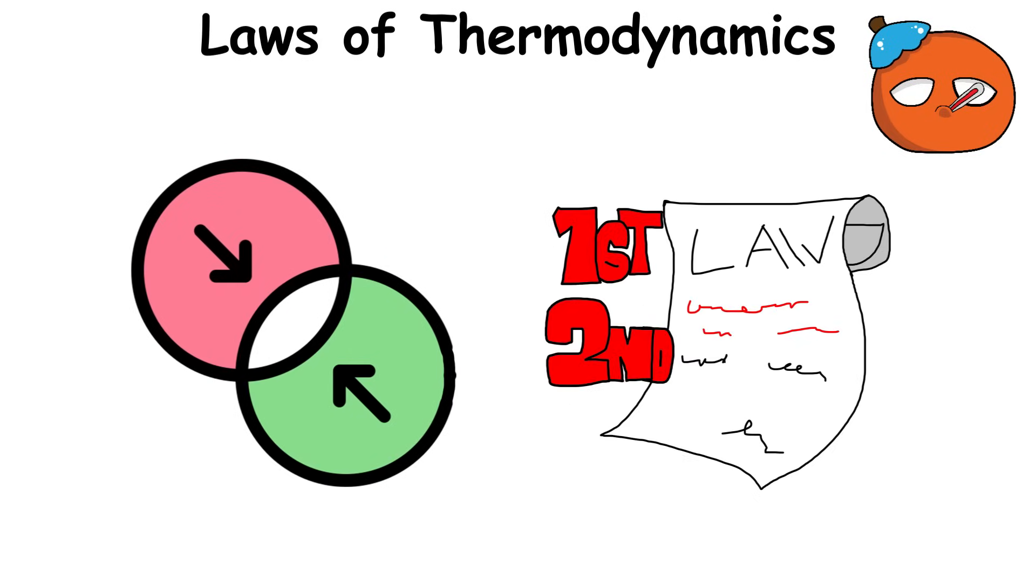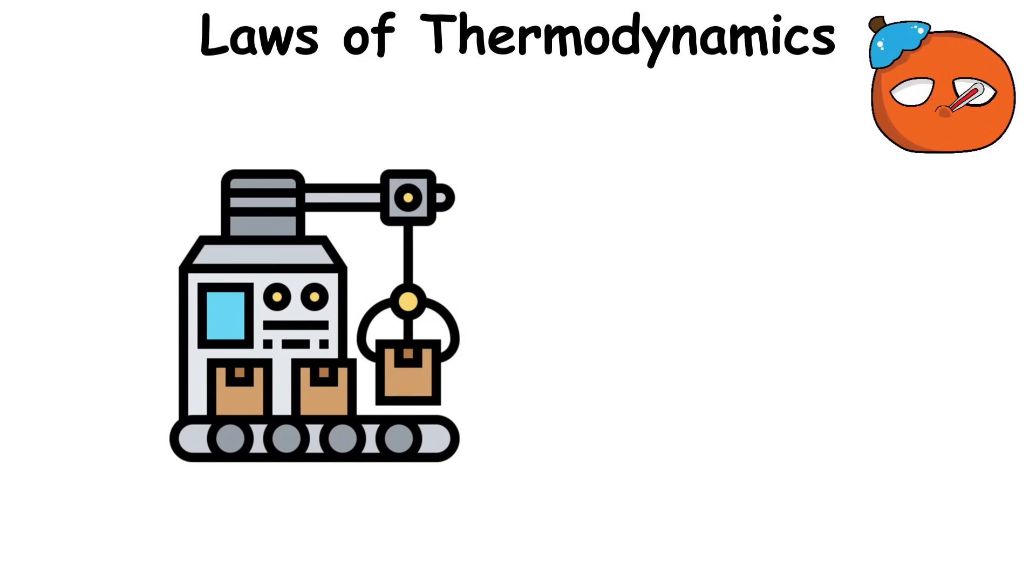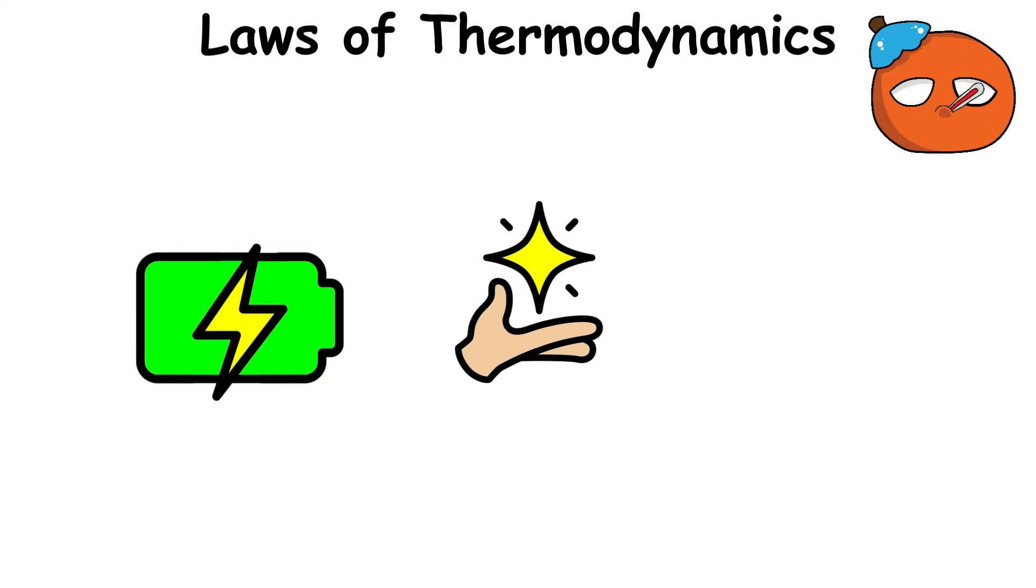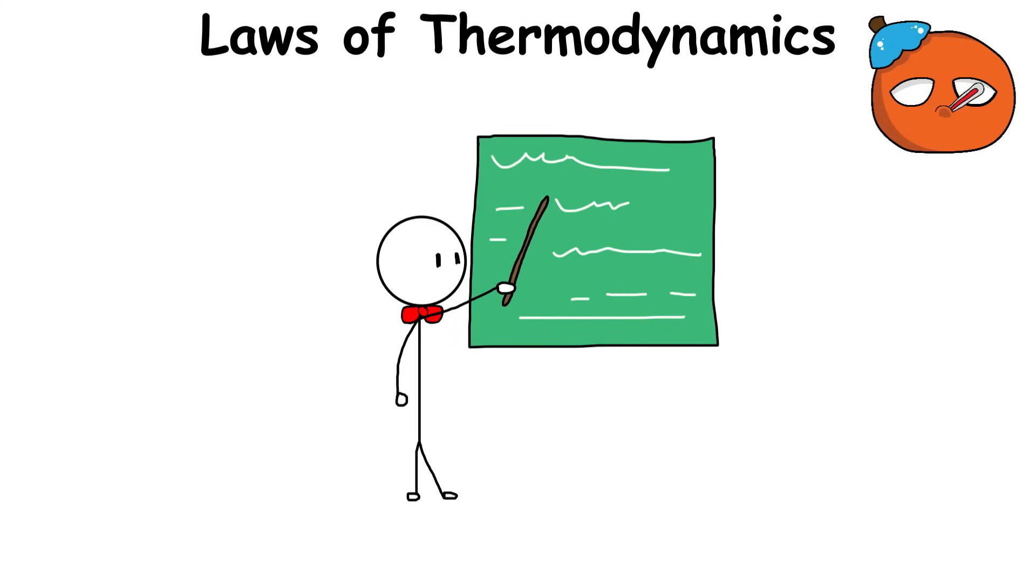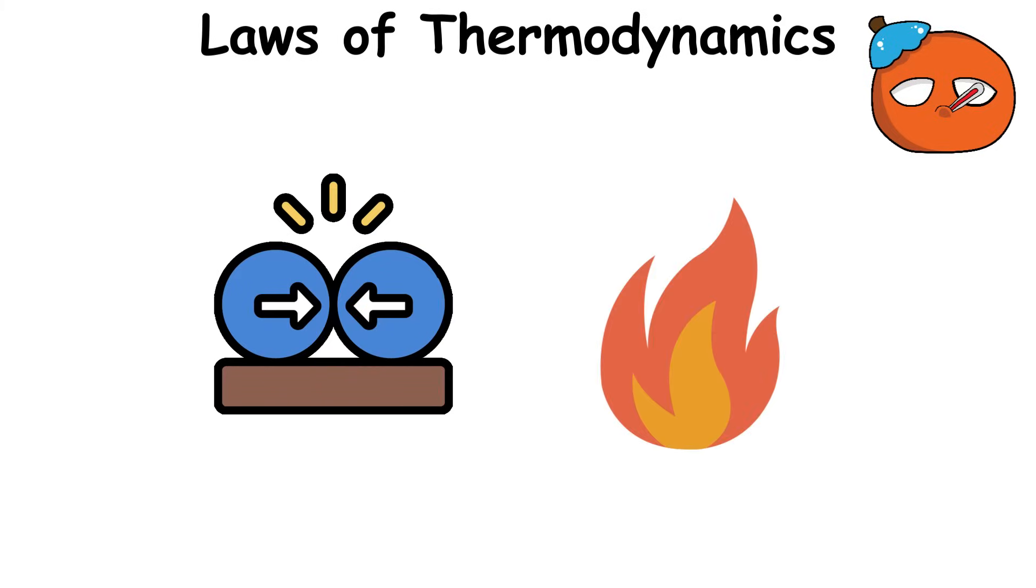Combined, the first and second laws of thermodynamics explain why perpetual motion machines, or machines that can move without an external energy source, are impossible. It violates the fact that energy can neither be created nor destroyed. Moreover, according to the second law, a machine will eventually lose energy to friction or heat and stop moving.